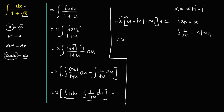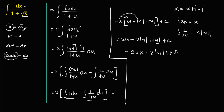Now we substitute back the value of u. Since u is equal to the square root of x, we have 2 times the square root of x, minus 2 ln of the absolute value of 1 plus the square root of x, plus C. This is the final answer.